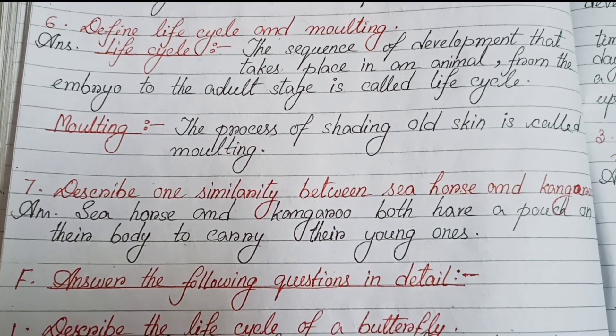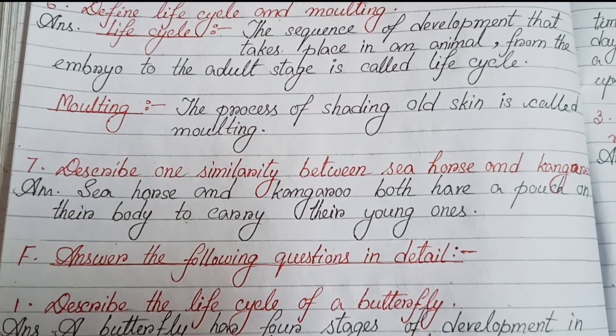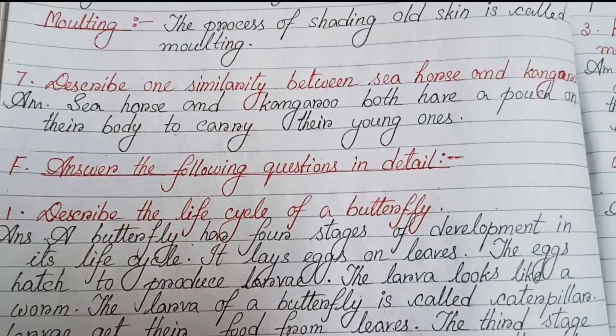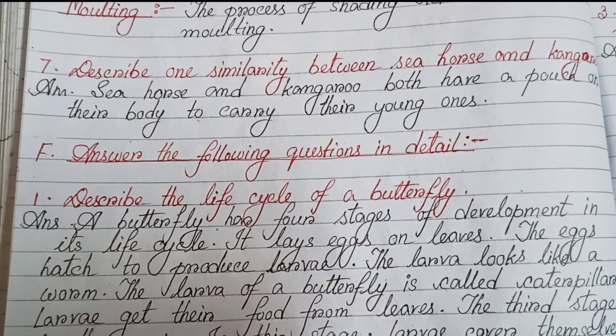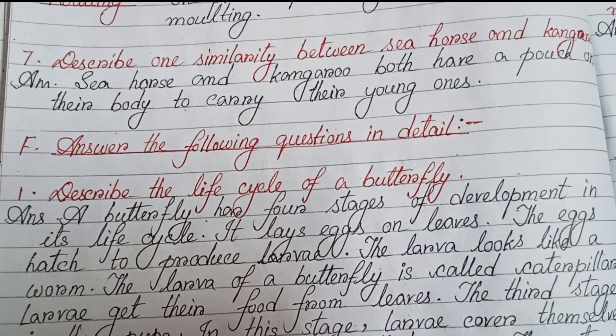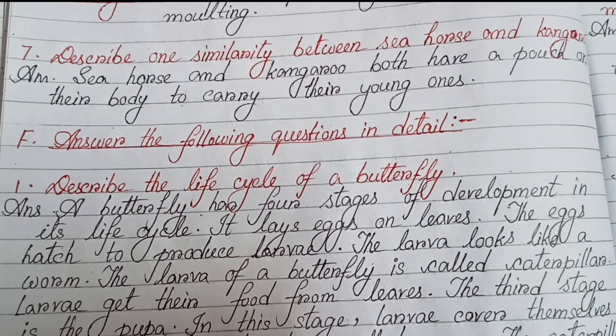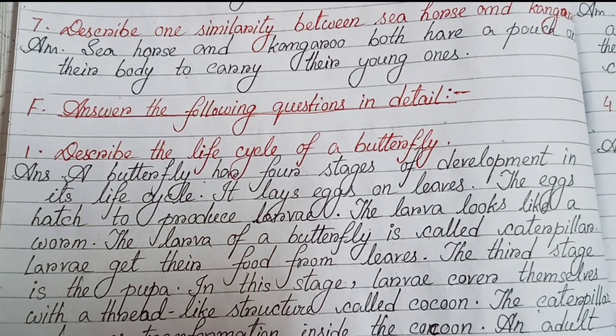Question seven: Describe one similarity between seahorse and kangaroo. Both the seahorse and kangaroo have a pouch on their body to carry their young ones.